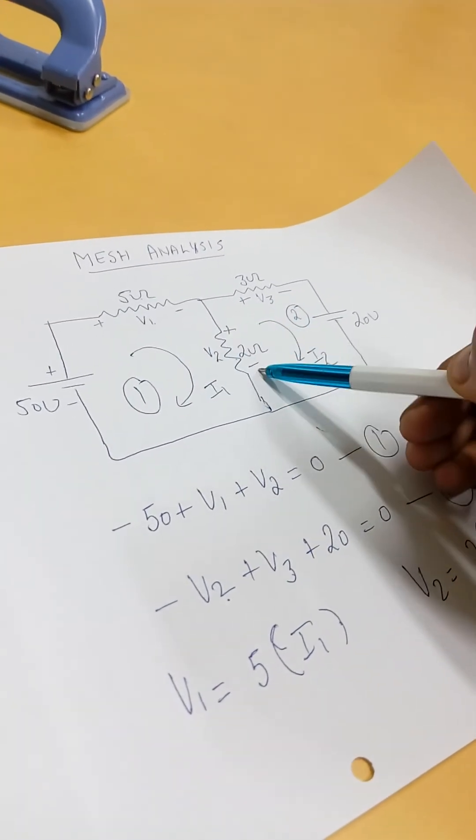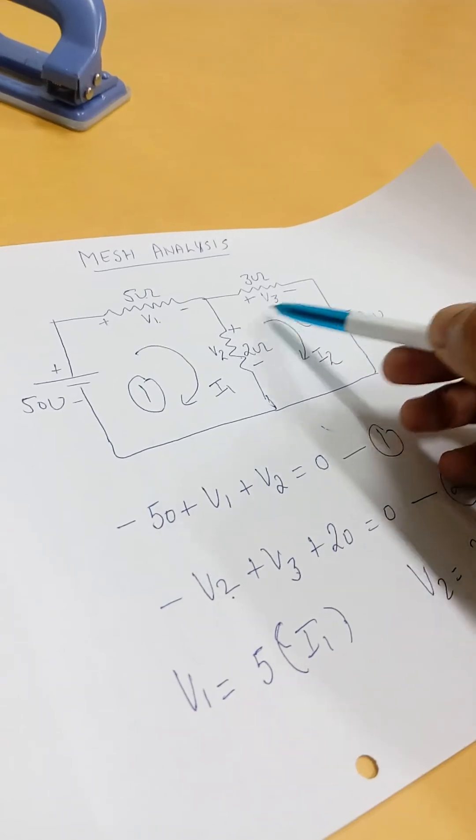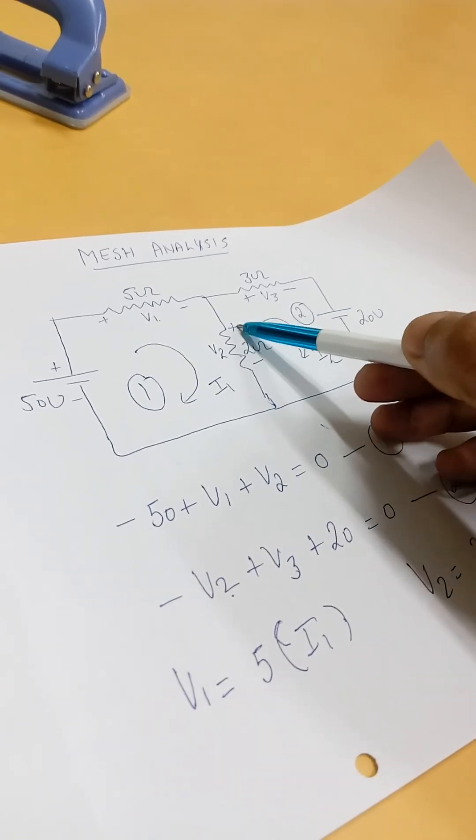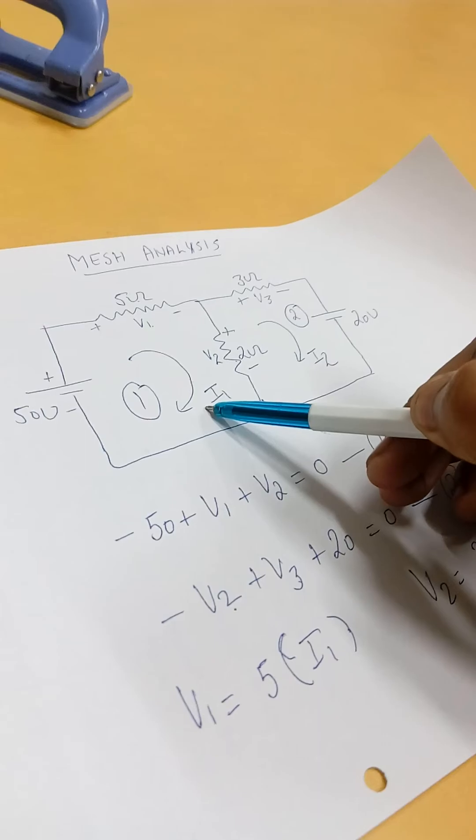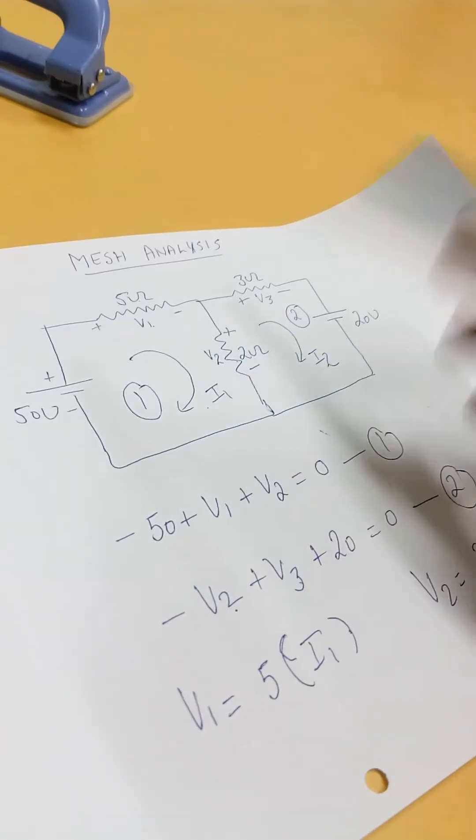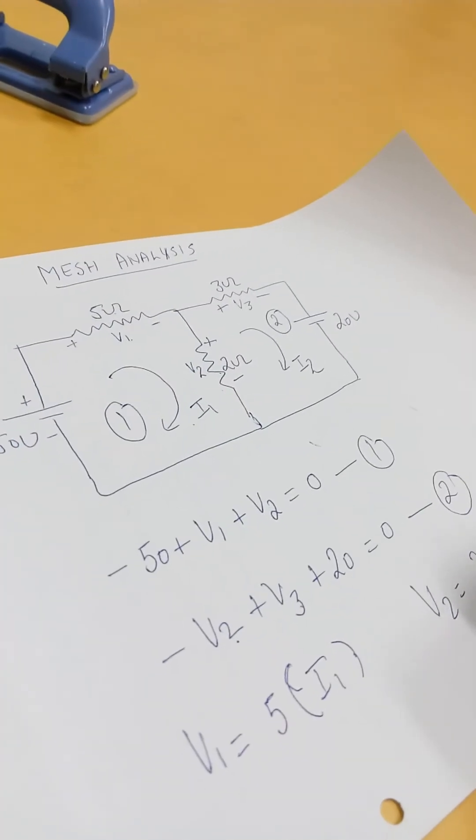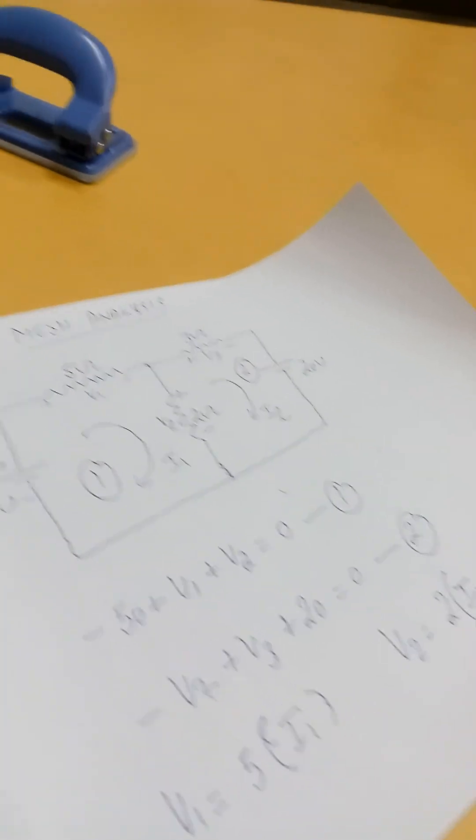So we will consider the loop in which the current is going positive to negative, so this is I1 minus I2. Similarly, V3 will be V3 into I2.